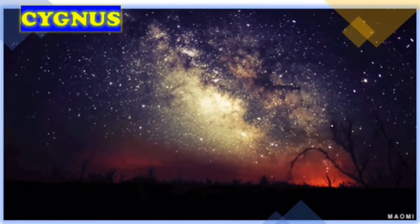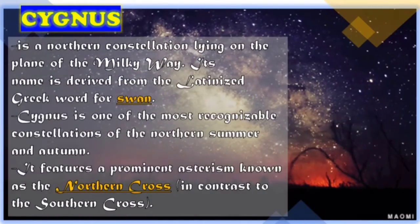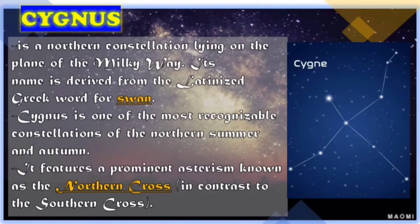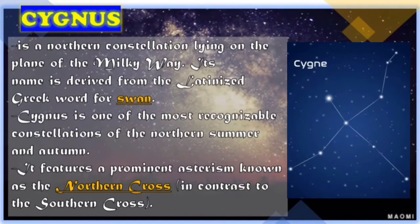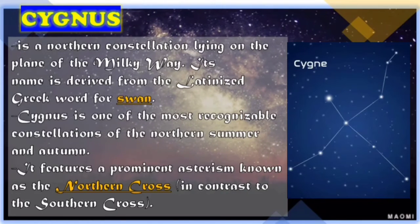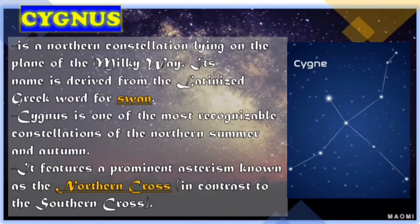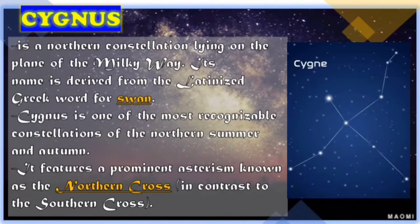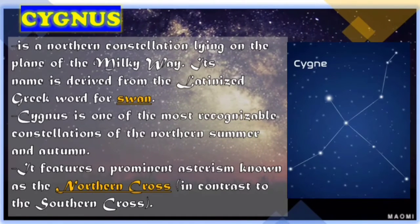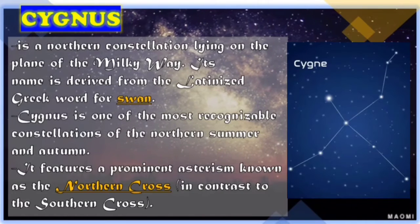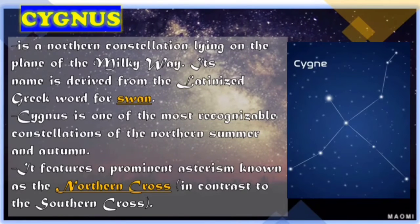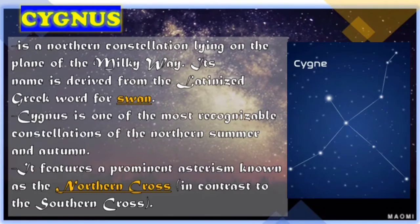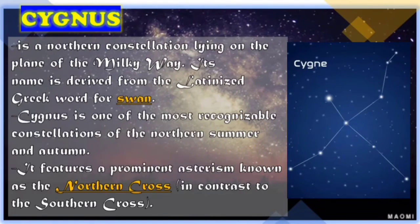Another constellation is Cygnus. It is a northern constellation lying on the plane of the Milky Way. Its name is derived from the Latinized Greek word for swan. Cygnus is one of the most recognizable constellations of the northern summer and autumn. It features a prominent asterism known as the Northern Cross, in contrast to the Southern Cross.